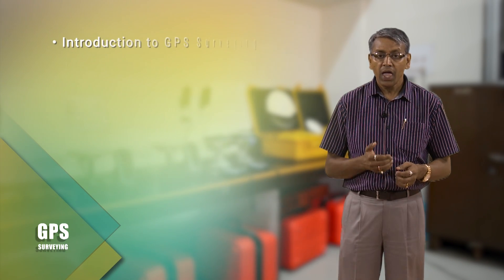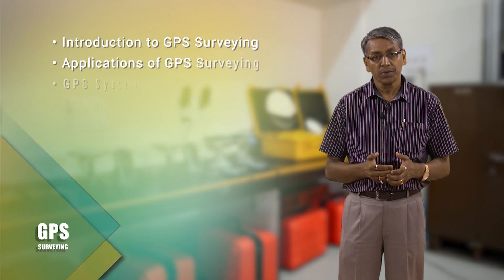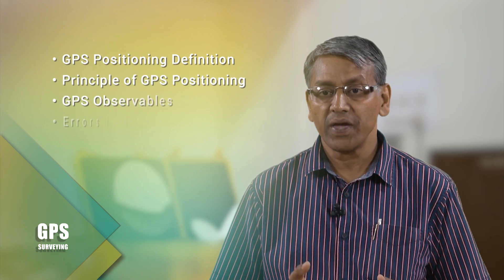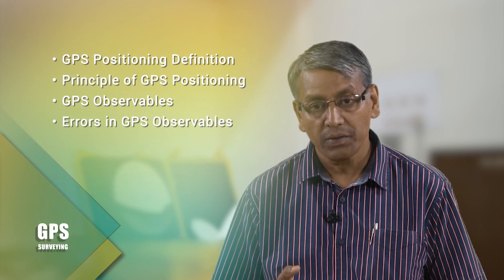The aim of this course is to provide insight into geospatial positioning as well as field collection of geospatial data using GPS. The course has four broad modules. In the first module, the ground of GPS surveying consisting of introduction to GPS surveying, applications of GPS system, GPS signal, GPS receivers and GPS softwares will be discussed. The second module will be devoted to GPS positioning, in which GPS position definition, principle of GPS positioning, GPS observables and errors in GPS observables will be discussed.